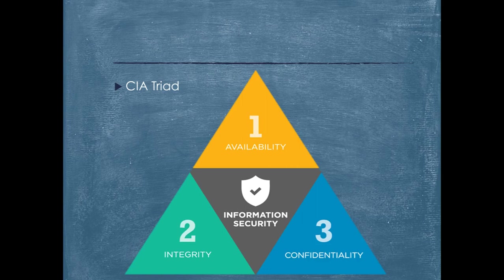Confidentiality is equivalent to privacy. When I send information to you, you receive it and nobody else — just like when I send a FedEx or a parcel to you, you receive it and nobody else. The person authorized to receive the sensitive information should be the one receiving it. As information security administrators, we restrict people from unauthorized access. Data is categorized according to the amount and type of damage that could be done if it falls into unintended hands, and stringent measures must be taken to ensure confidentiality.